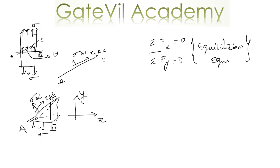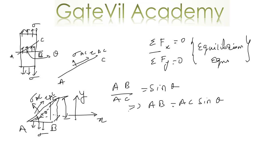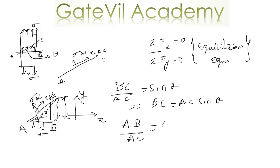The area depends on the geometry. If the angle is theta, then AB divided by AC equals sin theta, so length AB equals AC sin theta. And length BC equals AC cos theta.